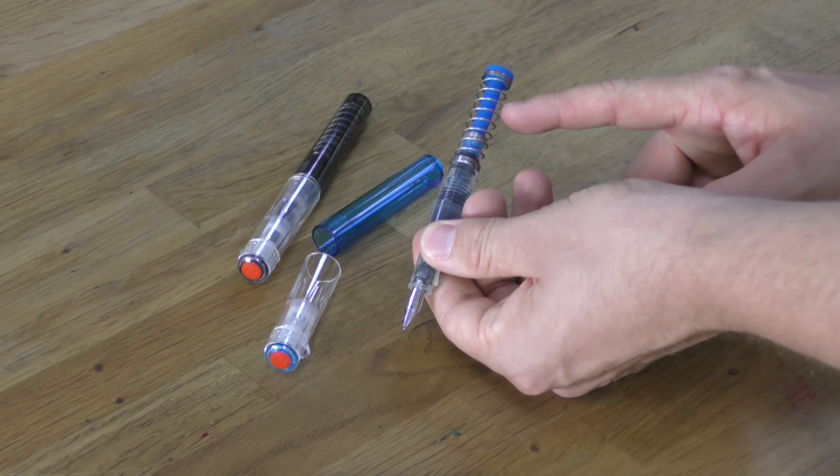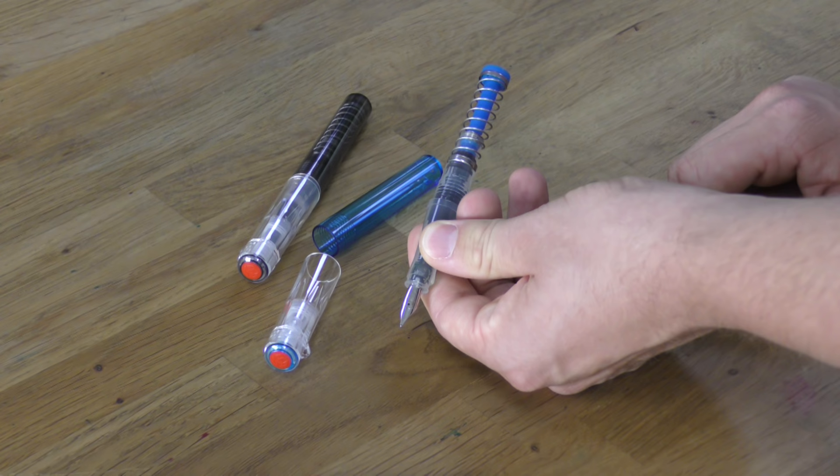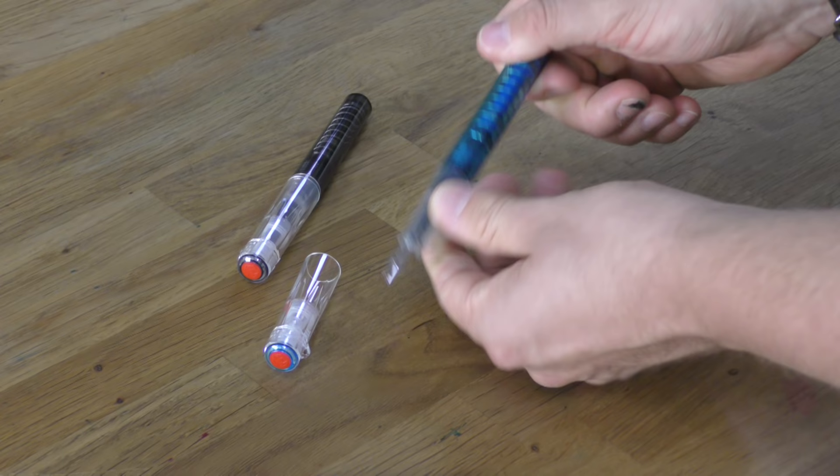The barrel detaches from the pen and then you can more easily see the piston mechanism, which is spring-loaded. The colour of the mechanism then also matches either sapphire or smoke of the pen.